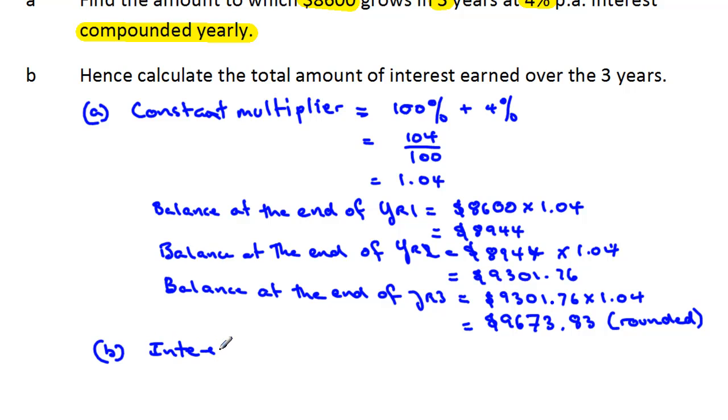this is what we wanted to earn simply because we invested the money, the interest equals - actually, the other way around - what we finished with, $9,673.83, because that's the larger amount. And from that, we subtract what we started with, that's the money we put in, $8,600. And the amount finally earned is $1,073.83.